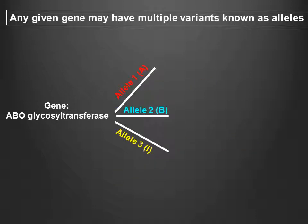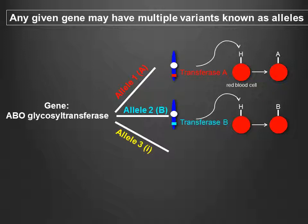A gene may come in several variants called alleles. The ABO glycosyl transferase gene has three major variants. Allele 1, denoted by capital A, produces a glycosyl transferase that converts the H antigen on the surface of red blood cells to an A antigen. Allele 2, denoted by capital B, produces a glycosyl transferase that converts the H antigen to a B antigen. Lastly, allele 3, denoted by little i, produces a non-functional glycosyl transferase.